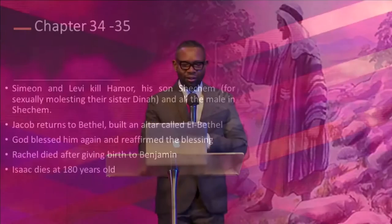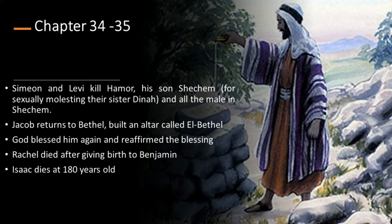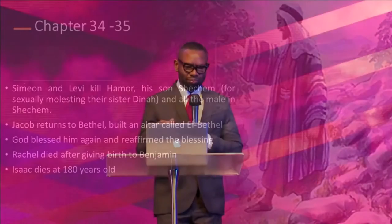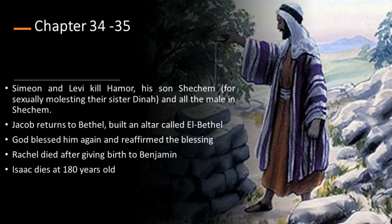In chapters 34 and 35, we see two sons of Jacob — Simeon and Levi — who killed Hamor and his son Shechem for sexually molesting their sister Dinah, along with all the males in Shechem. They deceived the people to carry out their act. Then Jacob returned to Bethel, built an altar called El-Bethel, and God blessed him again. Later in that chapter, Rachel died while giving birth to Benjamin, and Isaac also died.